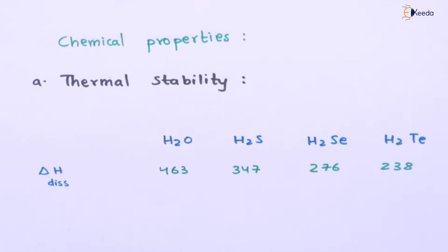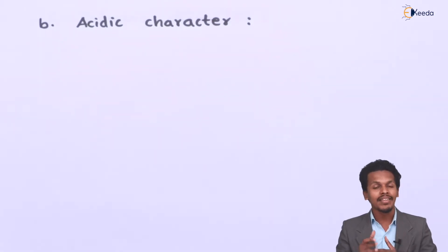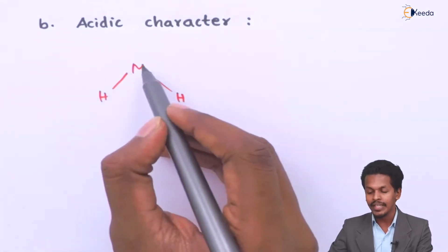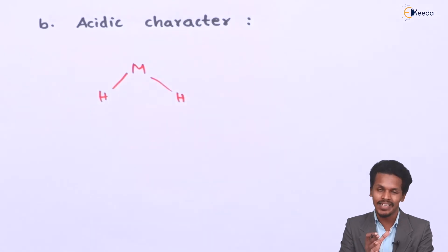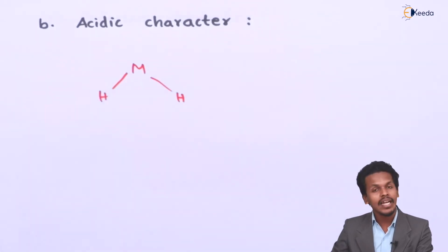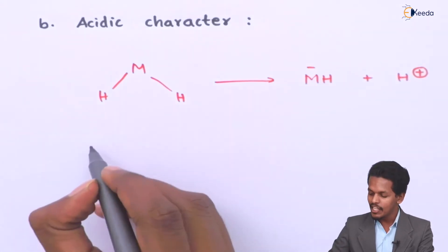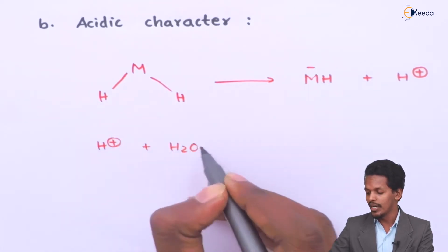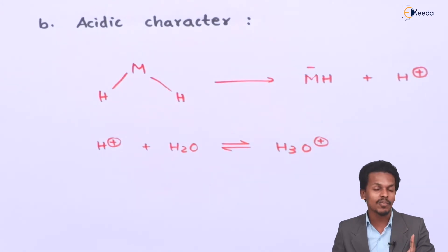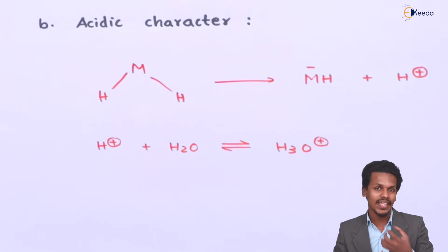This was related to thermal stability. Now let me talk about the next property, that is acidic character. The bond between the central atom and the hydrogen atom is very much polar. In this case M represents the group 16 elements. Because this bond is very much polar and the central atom is very much electronegative, whenever it dissociates it will form MH⁻ along with H⁺. This H⁺ ion, whenever accepted by water H2O, will form the hydronium ion H3O⁺. So the hydrides have the characteristic to give out H⁺ ions, making them acidic in nature — though they are weak acids. Water is the weakest acid compared to the others.